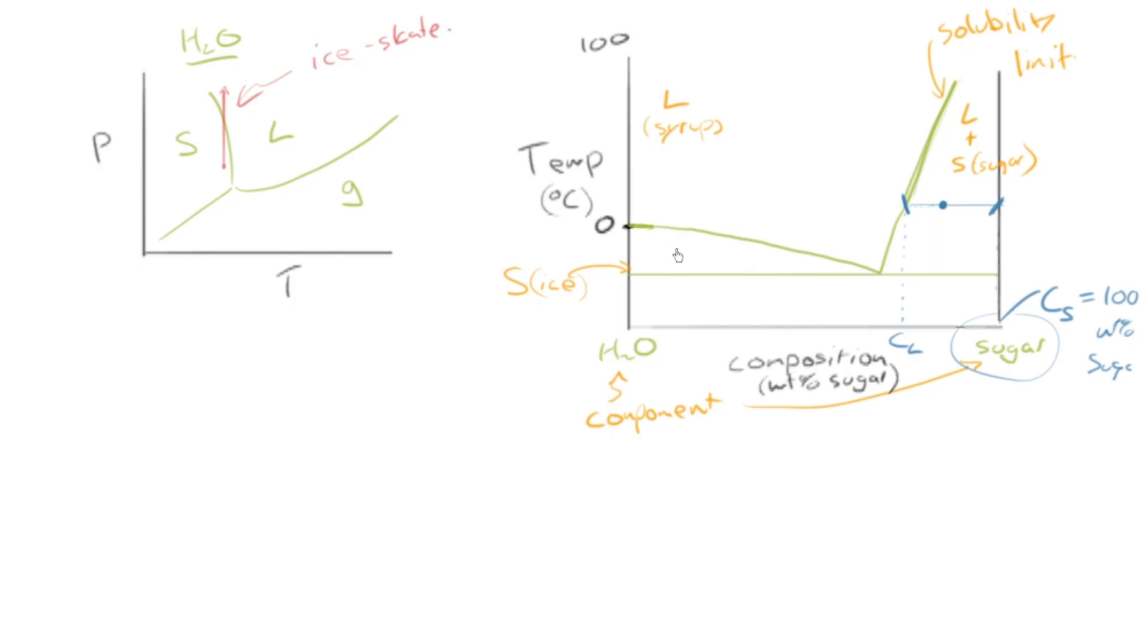So similarly, we could do that anywhere over here in one of these regions and draw a line over to the left and over to the right. And we'd hit a phase boundary on each side. And it would give us the composition of the liquid on the right-most side and the composition of the solid. So what we can take from that is that we can actually identify this region as being made of two phases. Solid, ice, plus liquid, syrup. Similarly, down here, we've got solid ice plus solid sugar.